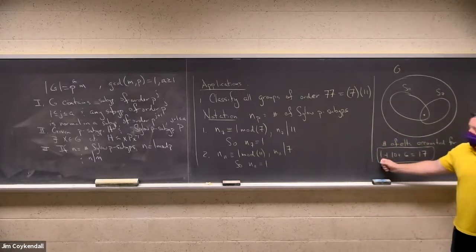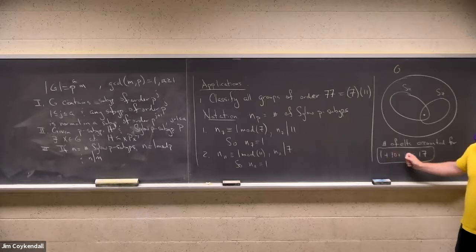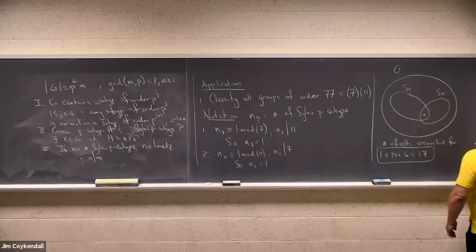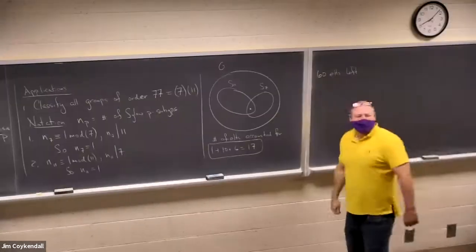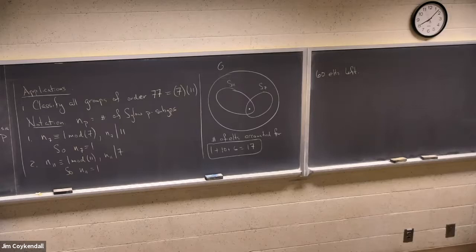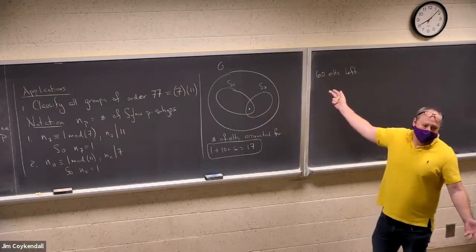So what do these numbers mean? There's the identity, I better count this correctly. This is the number of elements in the Sylow 11 group that aren't the identity, and this is the number in the Sylow 7 group that aren't the identity. How many elements do I have left? 60. So ask yourself this: what order could an element of the 60 left over have?